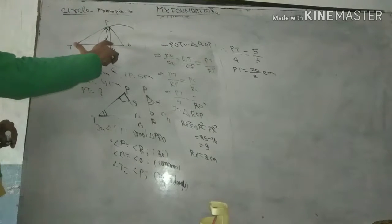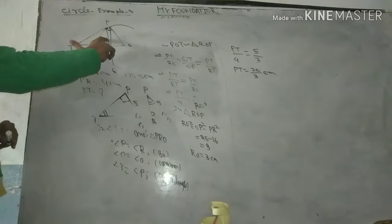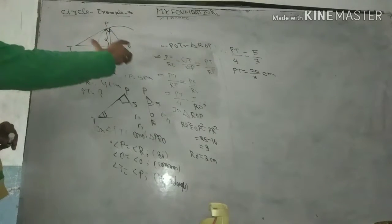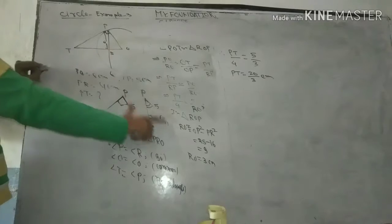We have the perpendicular from O to PQ. This is 4. If you take the triangle, then 4 and 5 give us 3.